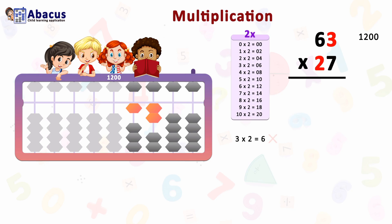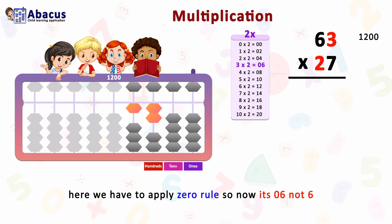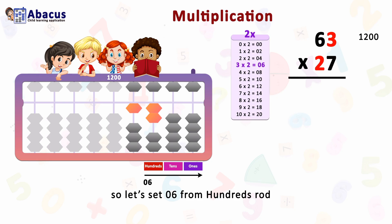The second step is 3 times 2 equals 6, but 6 alone is not the correct answer. We have to apply the Zero Rule, so it becomes 06, not just 6. Now a three-digit calculation remains — 3, 2, and 7 — so three rods will be used: ones, tens, and hundreds.